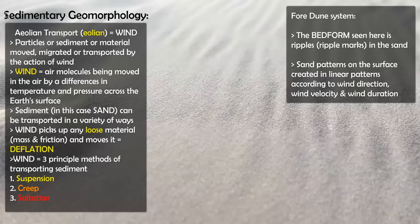All three of these transportation types are based on deflation. Deflation is the process of wind picking up loose material off the surface of the Earth and moving it — in this case sand — from place to place, A to B. Creep, suspension, and saltation are all a result of deflation.